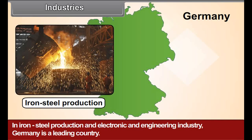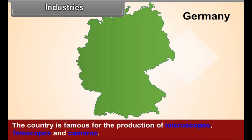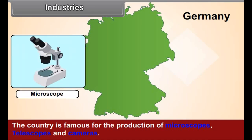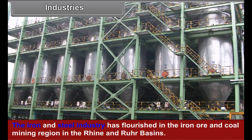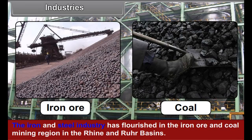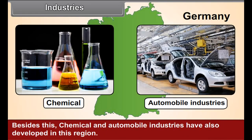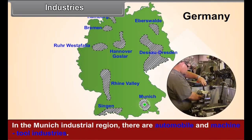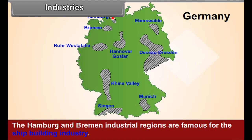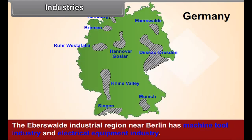In Germany, large-scale industrial development has taken place in iron and steel production and in the electronic and engineering industries. Germany is a leading country famous for the production of microscopes, telescopes, and cameras. The iron and steel industry has flourished in the iron ore and coal mining region of the Rhine and Ruhr basins. Chemical and automobile industries have also developed in this region. In the Munich industrial region there are automobile and machine tool industries.